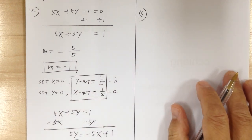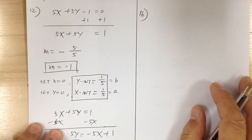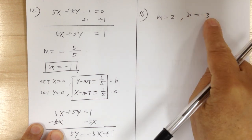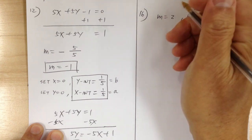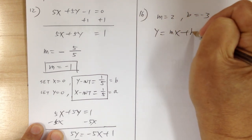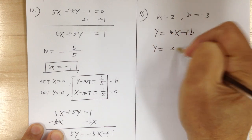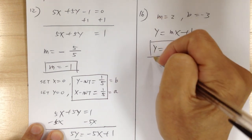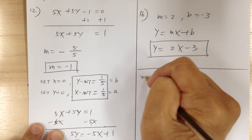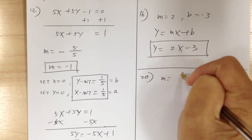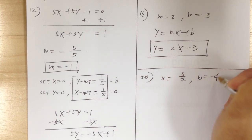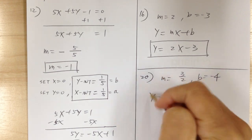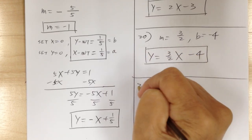Number 16 asks for the equation of a line given slope m and y-intercept b. With m equals 2 and b equals negative 3, since slope-intercept form is y equals mx plus b, just substitute to get y equals 2x minus 3. Number 20: m equals 3 over 2 and b equals negative 4, so y equals 3 over 2 times x minus 4.